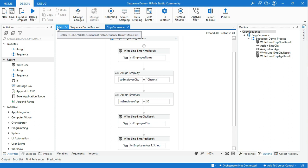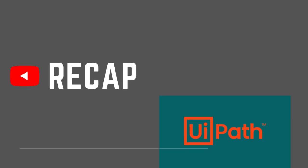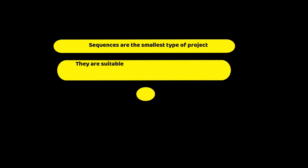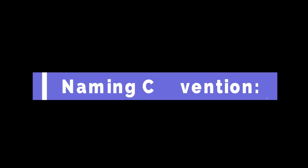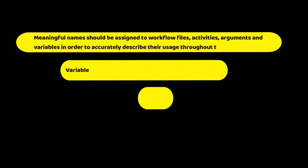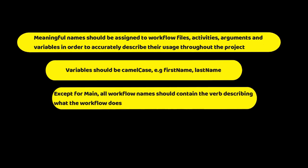Except for Main, all workflow names should contain a verb describing what the workflow does. Recap: Sequences are the smallest type of project. They are suitable for linear processes as they enable you to go from one activity to another seamlessly, and they act as a single block activity. One key feature of Sequence is that they can be reused. Naming convention: meaningful names should be assigned to workflow files, activities, arguments, and variables in order to accurately describe their usage throughout the project. Variables should be camelCase. Except for Main, all workflow names should contain a verb describing what the workflow does.